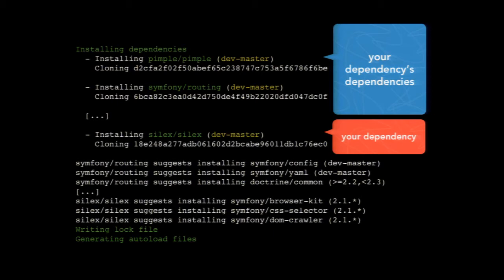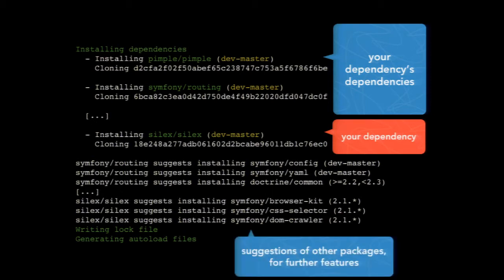Composer also does suggestions. For every package, you can suggest other packages which might make sense. In this case, Symfony routing suggests Symfony Config and Symfony YAML, which lets you create routing configuration in a YAML file. These suggestions will probably get you some new features or more advanced capabilities. After that's done, it writes a lock file and generates the autoload files. You now have a base folder with a vendors directory and all those dependencies in there. You can start coding.